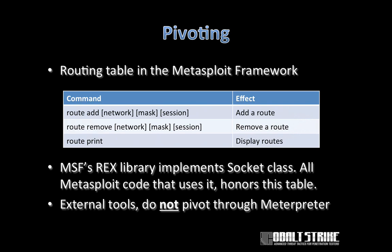Let's talk about pivoting through Meterpreter. A pivot is a compromised host that is a hop point for attacking other systems. The Metasploit Framework manages pivoting through Meterpreter as a routing table — there are commands to add a route, remove a route, and display all routes. Instead of the gateway being a router, it is a session. Pivoting is implemented in the Metasploit Framework's Rex library with its own socket class — any code that uses this socket class will honor the routing table. Anything that does not use this socket class will not go through a Metasploit Framework pivot.